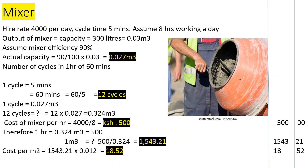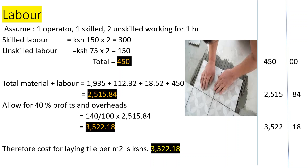Now let's look at labor. We assume one operator, one skilled laborer, and two unskilled laborers working for one hour. Skilled labor at 150 per hour × 2 = 300. Unskilled labor at 75 per hour × 2 = 150. Total labor cost = 450 per hour. Summary so far: tiles = 1,935; screed = 112.32; mixer = 18.52; labor = 450.